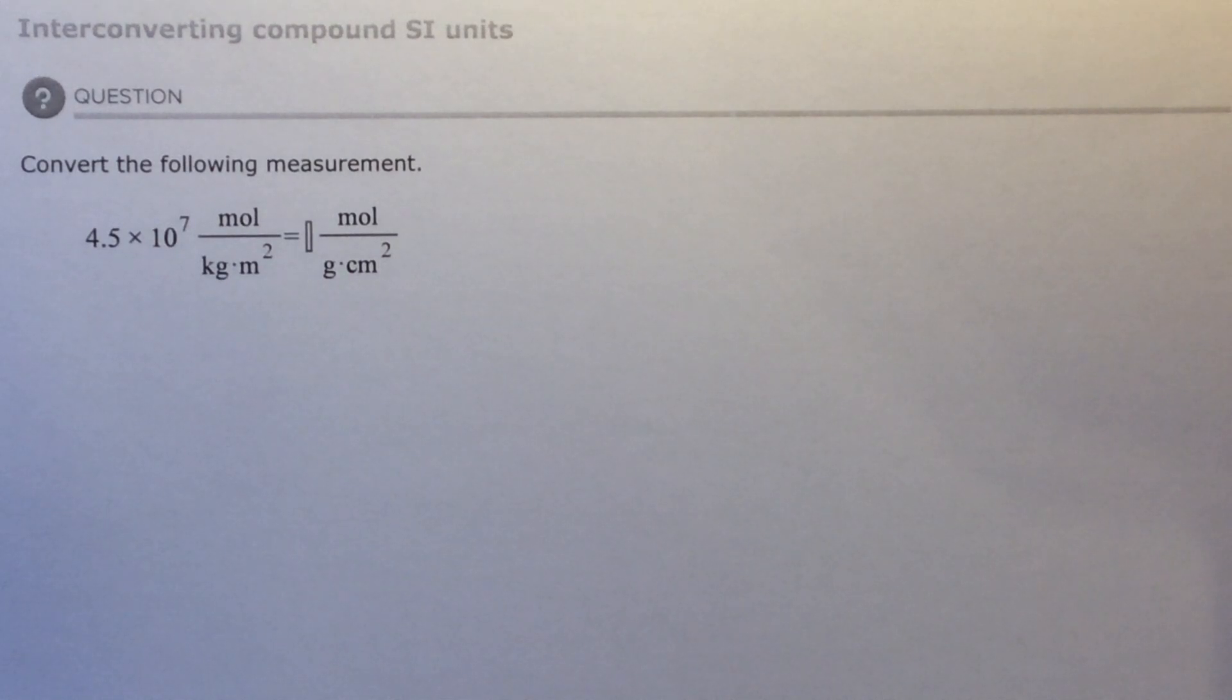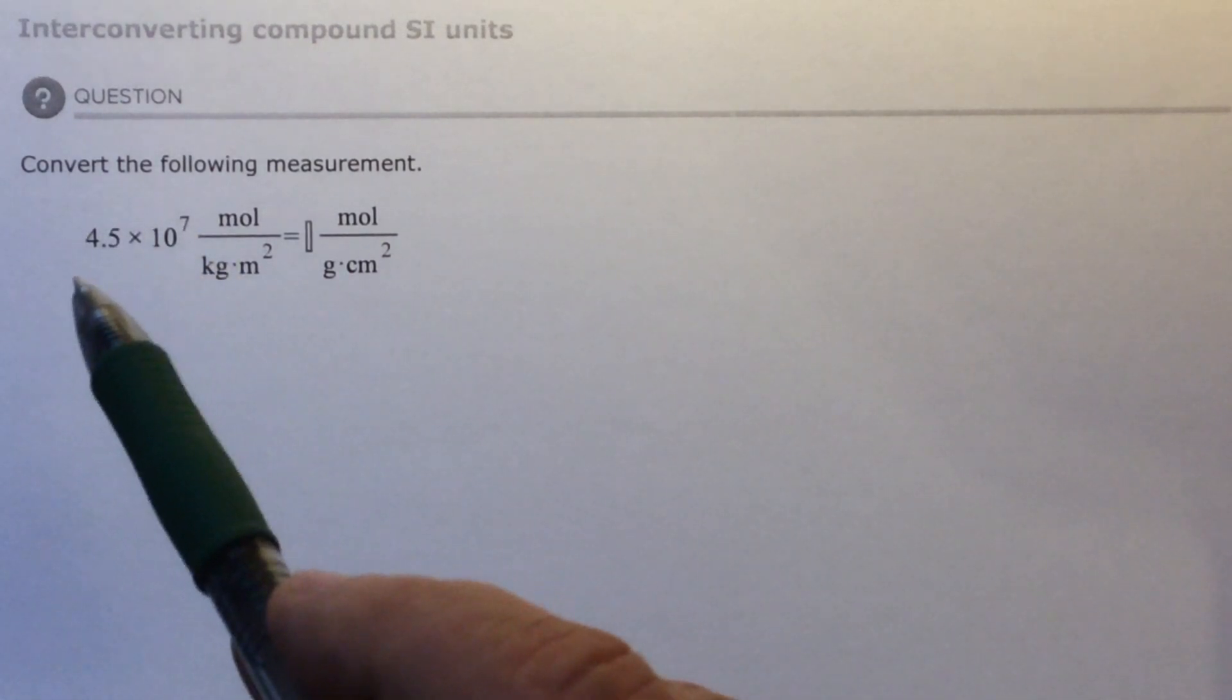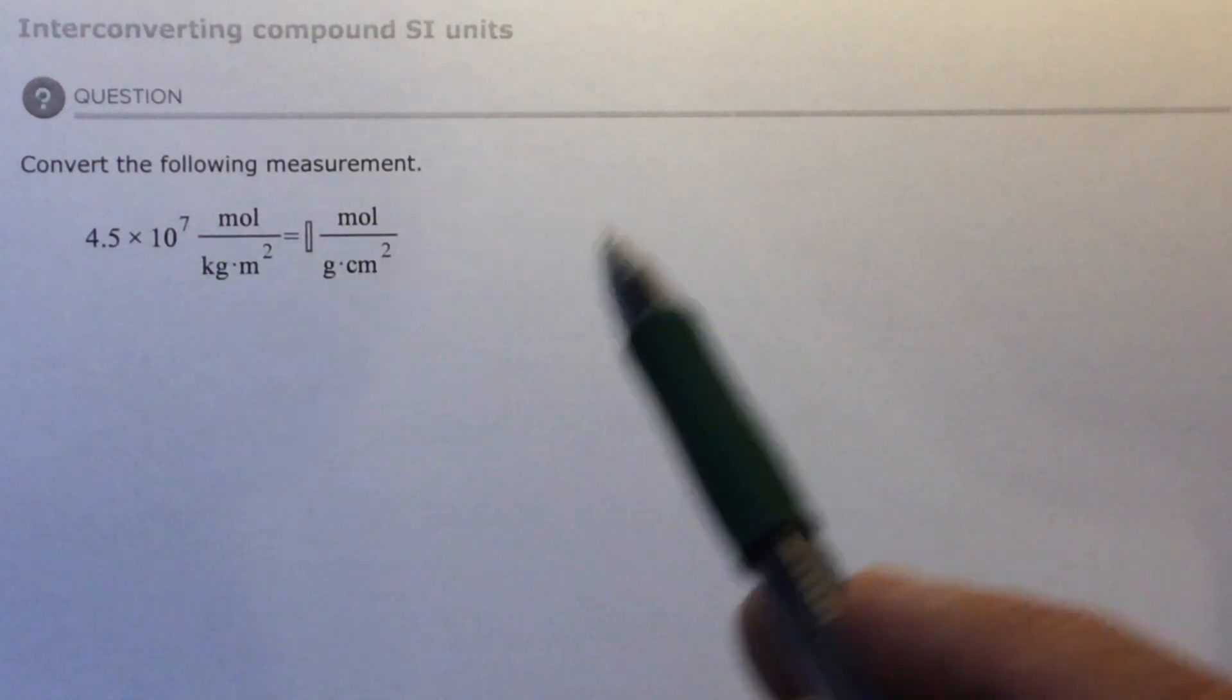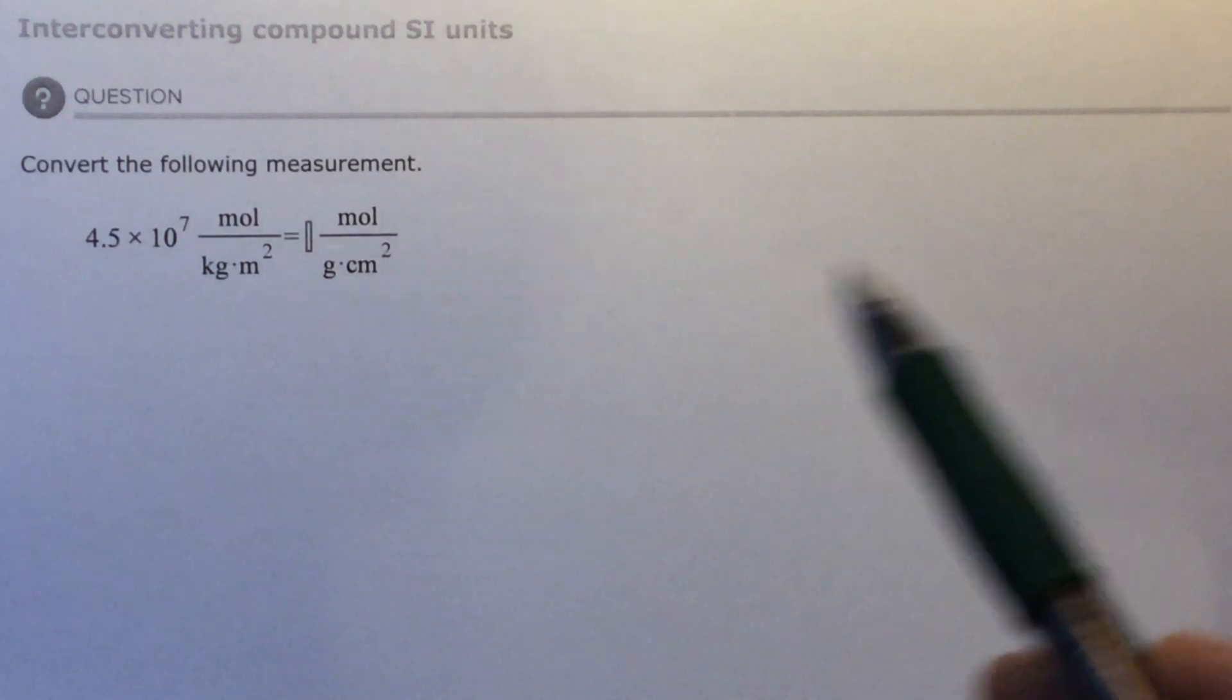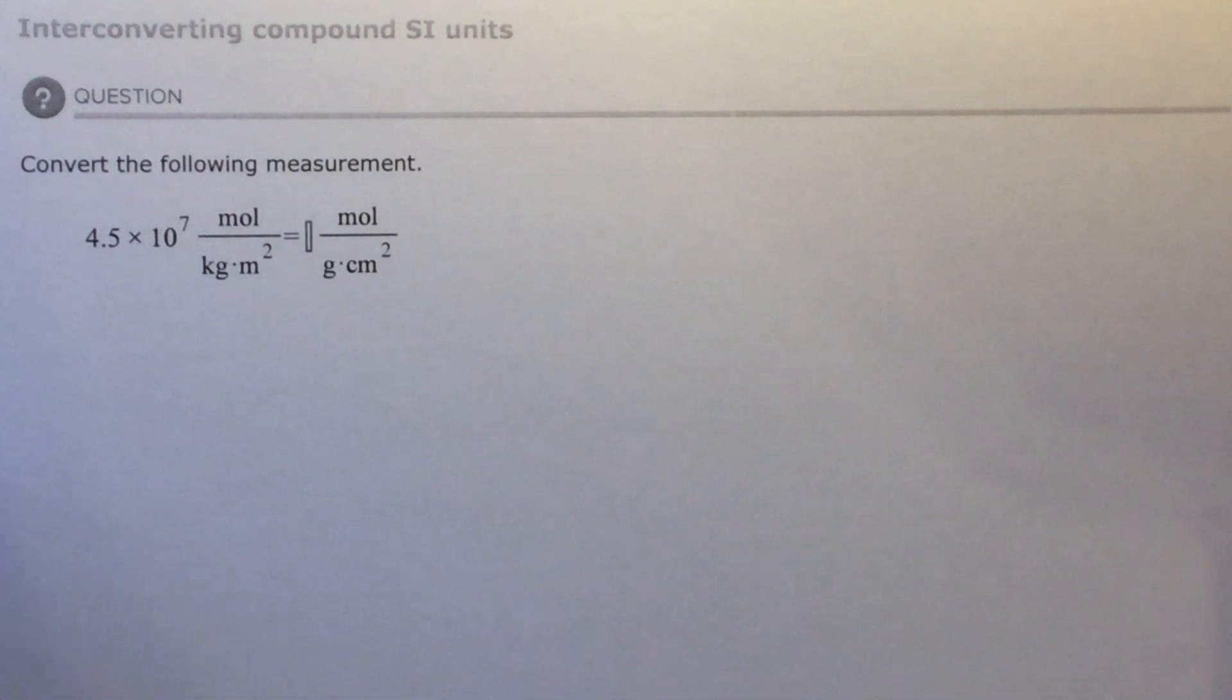So really you're just going to have whatever this number is, just keep it there, and then just keep adding multiples of one to where the units change. I'll give an example.